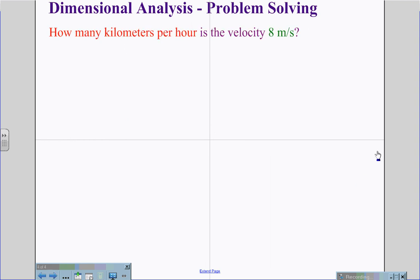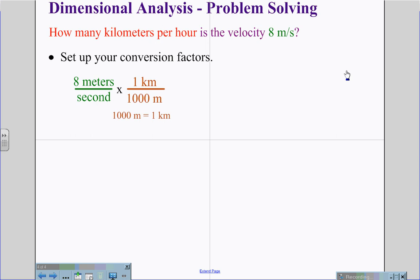Sometimes our units have units on both the top and the bottom, or in the denominator and the numerator. If we are looking for how many kilometers per hour is in the velocity 8 meters per second, first thing we want to do is set up the problem using conversion factors. Eight meters per second. We are going to convert to kilometers. There are 1,000 meters in every one kilometer. This will allow us to cancel meters and get to kilometers.